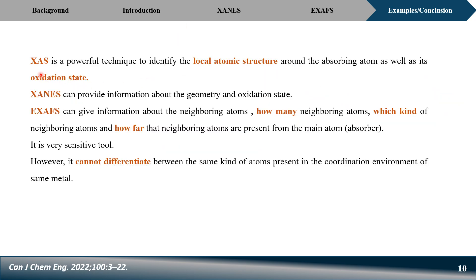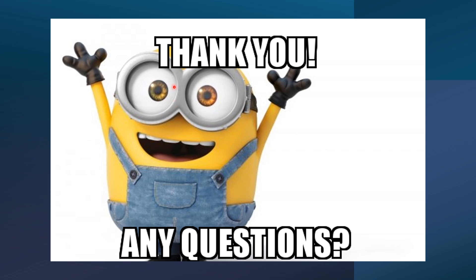In conclusion, XAS is a very powerful technique used to identify local atomic structure. XANES gives information about geometry from the pre-edge region and oxidation state from the rising edge. EXAFS gives information about how many neighboring atoms are present, which kind of atoms they are, and how far they are. It is a very sensitive tool; however, it cannot differentiate between the same kind of atoms, which is why fitting calculations are needed. Thank you for listening — please feel free to ask questions in the comment section.